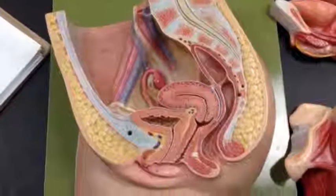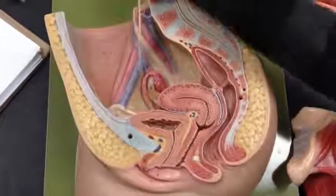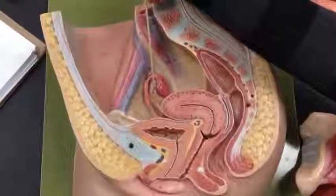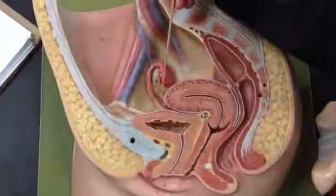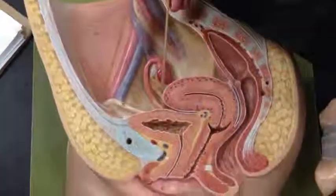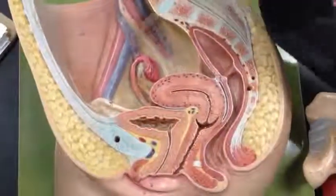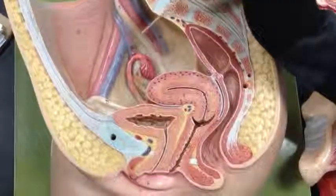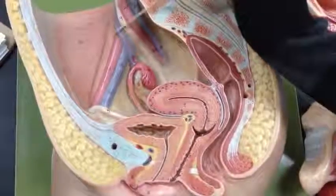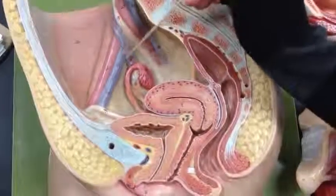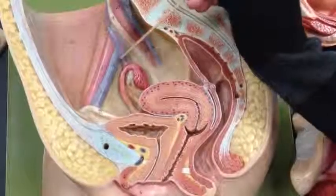This is the female reproductive system. This is the ovary. This is the ovarian ligament. And the suspensory ligament would be covering these ovarian vessels.